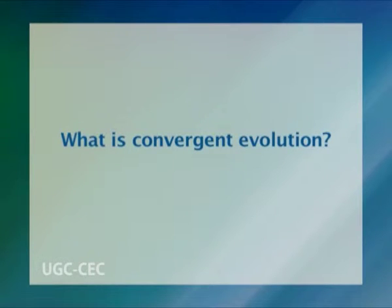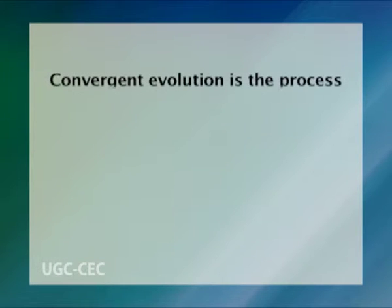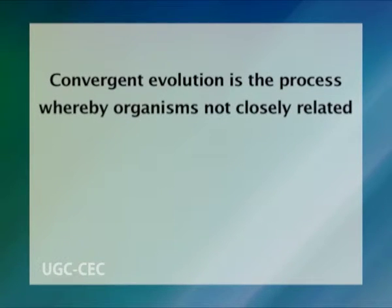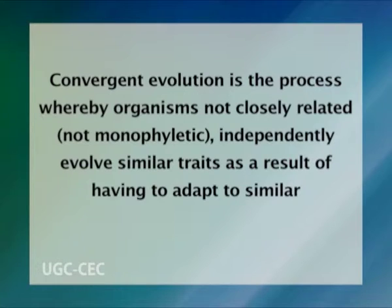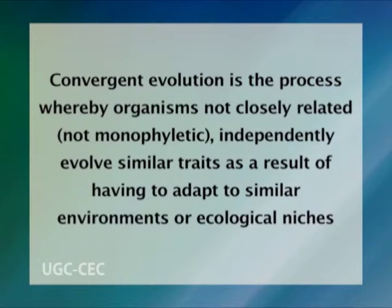In evolutionary biology, convergent evolution is the process whereby organisms not closely related independently evolved similar traits as a result of having to adapt to similar environments or ecological niches. Hence, convergent evolution occurs when organisms from different evolutionary lineages evolved similar adaptations to similar environmental conditions. This can happen even when organisms are very widely separated geographically.